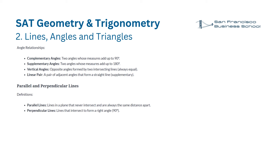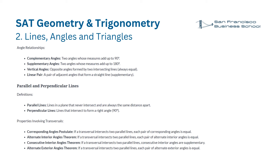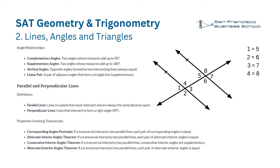Parallel and perpendicular lines. Parallel lines are lines in a plane that never intersect and are always the same distance apart. Perpendicular lines intersect to form a right angle (90 degrees). Properties involving transversals: corresponding angles are equal; alternate interior angles are equal; consecutive interior angles are supplementary; alternate exterior angles are equal — all when a transversal intersects two parallel lines.